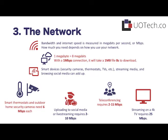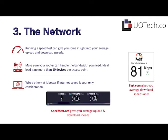Something like 75 megabits per second for a lot of modern homes doesn't quite meet the bill, especially when people are working remotely and working from home. You can run a speed test easily to find out what your average upload and download speeds are, and that can give you an idea of what your needs may be. You should run it at different times of the day. There are two sites we recommend: Speedtest.net gives you average upload and download speed, and fast.com gives you average download speeds only.